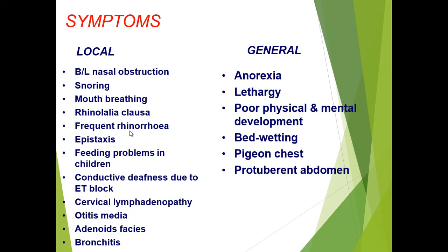Among the local symptoms, the patient can present with bilateral nasal obstruction, snoring, mouth breathing, rhinolalia clausa, frequent rhinorrhea, epistaxis (bleeding from the nose), and feeding problems in children due to nasal blockage. There can also be conductive deafness due to eustachian tube blockade, cervical lymphadenopathy, otitis media due to tube blockade, adenoid facies, and bronchitis.